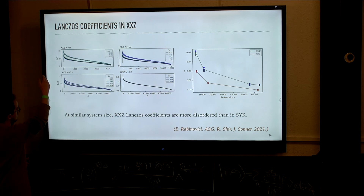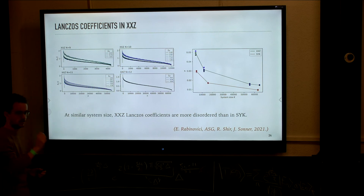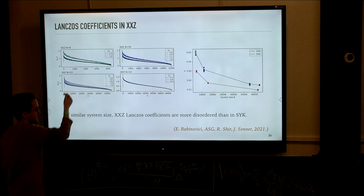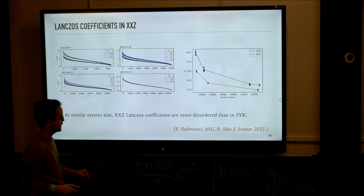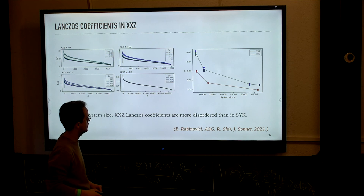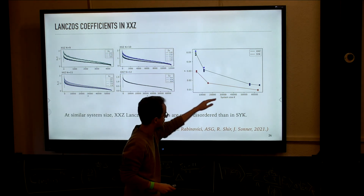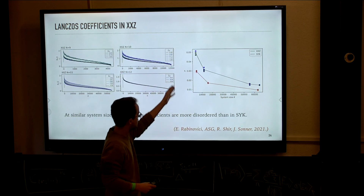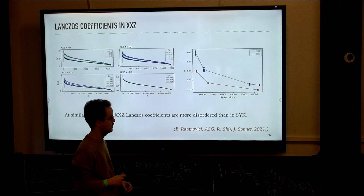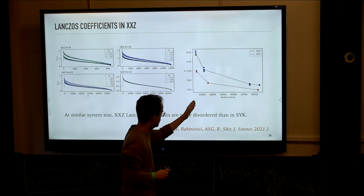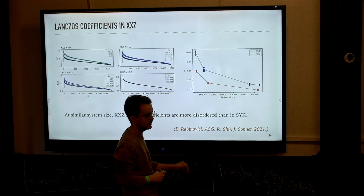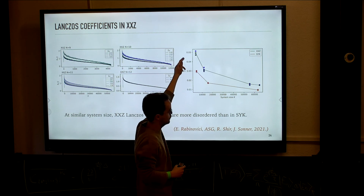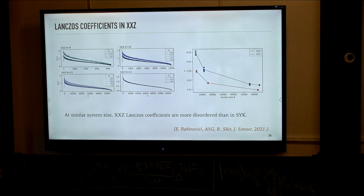The form of the Lanczos coefficients obtained in various instances of XXZ are actually very similar to what we saw in SYK: some initial growth, then a very slow non-perturbative decay towards zero, and the size of the Krylov space is exponential in system size, because there are no exact degeneracies and because the operator is dense in the energy basis. The only difference is that the sequence behaves a bit more erratically as it decays. We can measure the disorder of these Lanczos coefficients: for comparable system sizes, reddish colors (SYK) have lower values of disorder strength than the bluish colors (XXZ), confirming that disorder is stronger in XXZ.